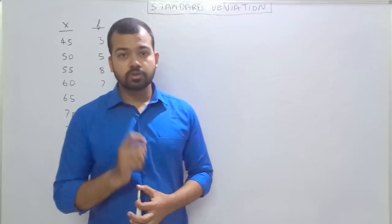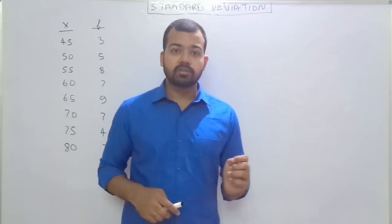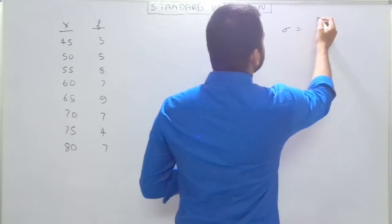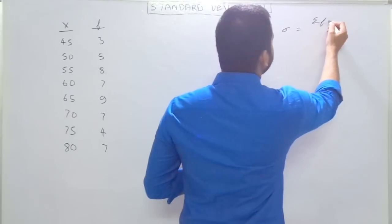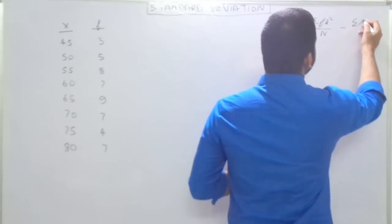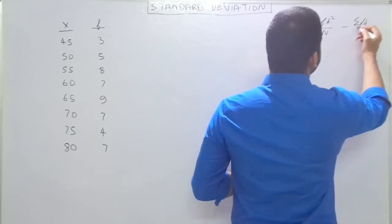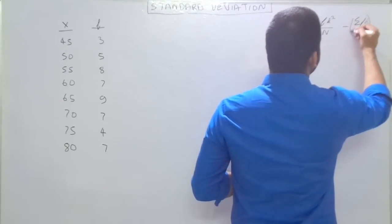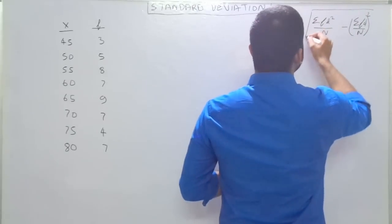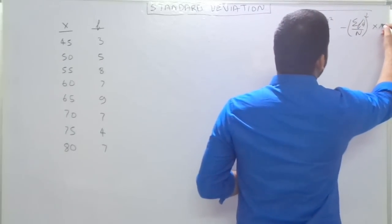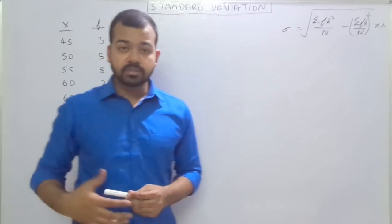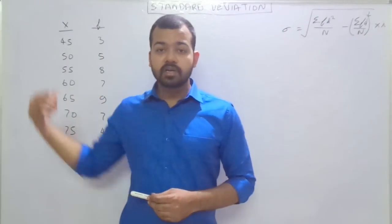So as usual the first step is to write the formula: square root of summation FD² upon N minus summation FD upon N, the whole squared, multiplied by i. Here the major difference is multiplied by i, which means the difference between the class interval.